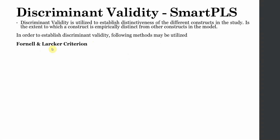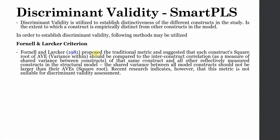To establish discriminant validity we have different methods. The first and probably the most used older method is the Fornell-Larcker criterion, proposed by Fornell and Larcker in 1981. It is a traditional metric suggesting that each construct's square root of AVE — already calculated for convergent validity — is referred to as within-construct variance. This should be higher than the inter-construct correlation, which is the measure of shared variance, to establish discriminant validity.